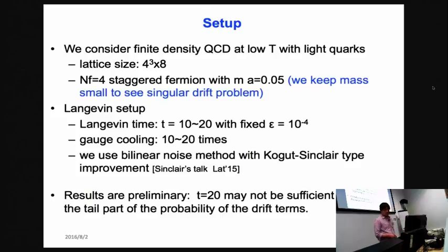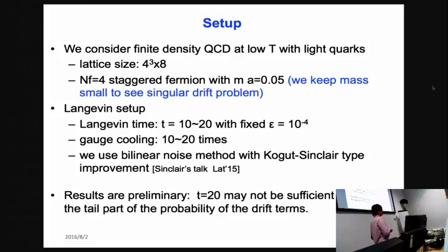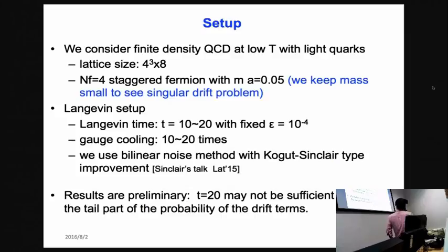Moving on to QCD at finite density, we consider finite density QCD at low temperature with somewhat light quarks. The lattice size has spatial extent 4 and temporal extent 8, with four-flavor standard fermions. The Langevin time is about 10 to 20, with a fixed Langevin step size ε. Gauge cooling is applied 10 to 20 times at every Langevin step, and for the fermion part we use the bilinear noise method with clover-type improvement. Results are preliminary as the Langevin time of 20 may not be sufficient to confirm the tail part of the distribution.